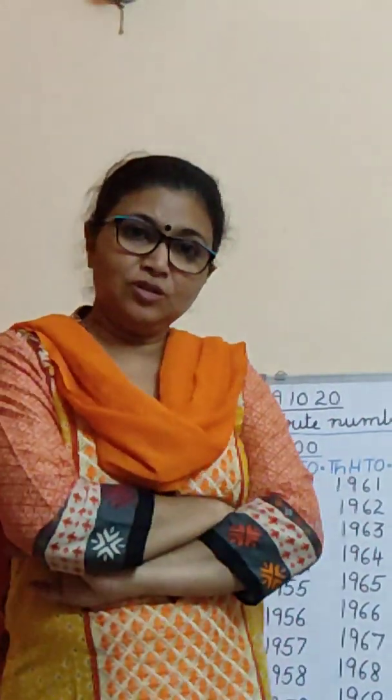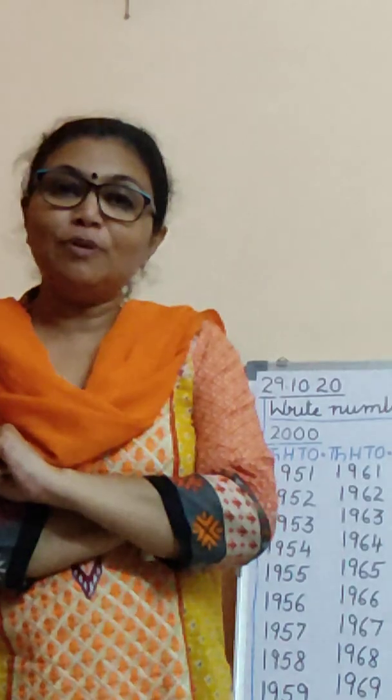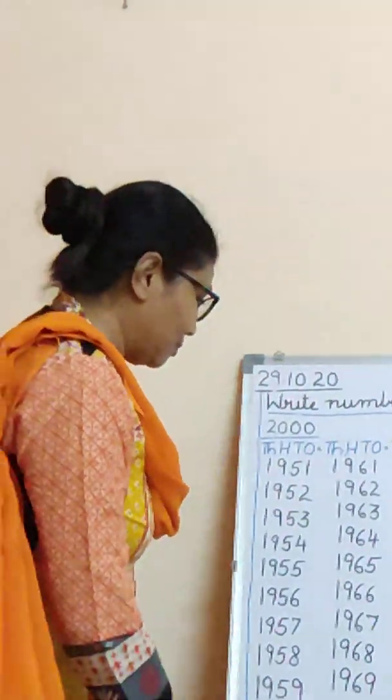Okay students, now we have done our numbers till 2000. So 1999, then 2000, okay? Ma'am made a mistake but ma'am is rectifying it — it is 1999 to 2000. One thing ma'am forgot in the beginning: ma'am forgot to give you the math syllabus. So when you finish writing till 2000, on a new page you will write your syllabus.